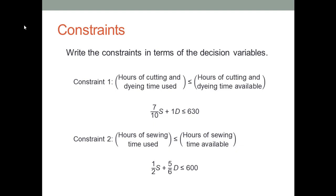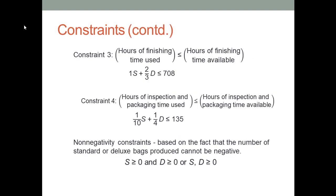You can use the same logic to build constraints for other departments, as shown on this slide and the next slide. We also have an implicit constraint: no matter what the values for S and D are, they cannot be negative. So we have S greater than or equal to 0 and D greater than or equal to 0.